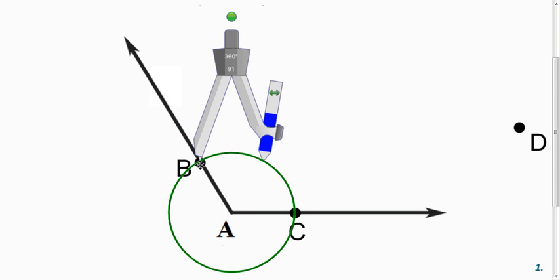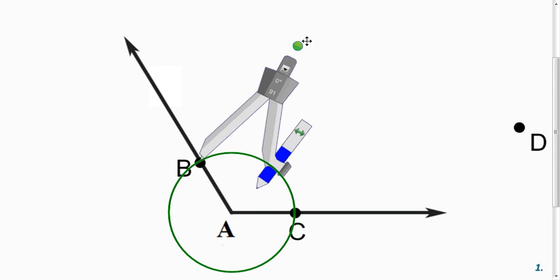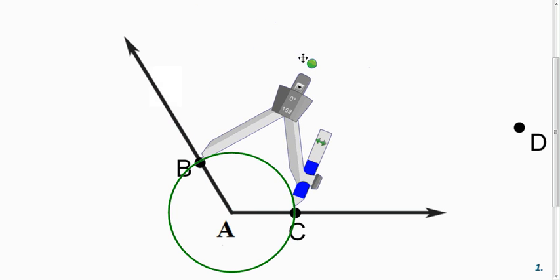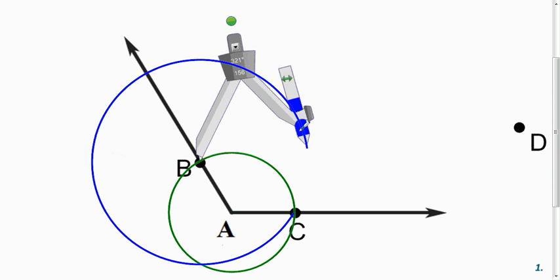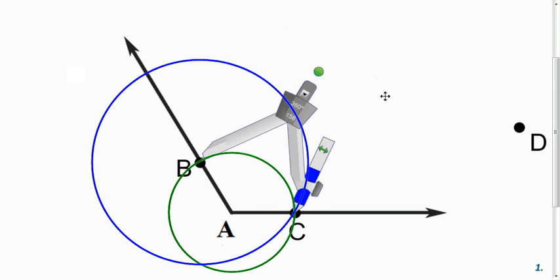Now what we're going to do is you're going to put the pivot on one of your intersection points and open it up so that the pencil touches the other point of intersection, and you're going to draw a circle there.